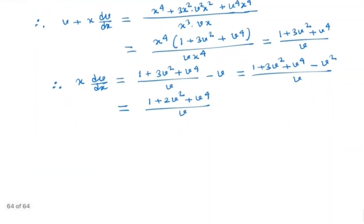So, if we again simplify, we can write this equation as v dv by 1 plus 2v² plus v⁴ is equal to dx by x. Clearly this is separable. So, what we will do, we will integrate both sides.